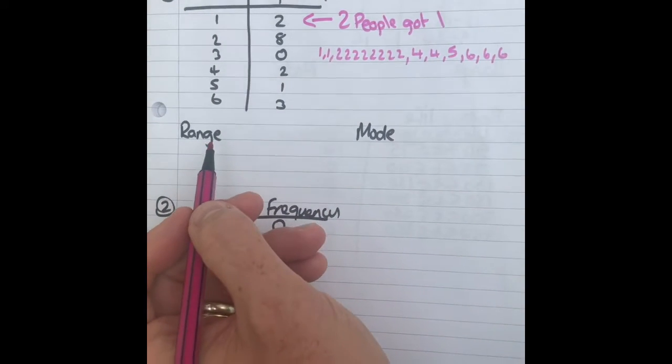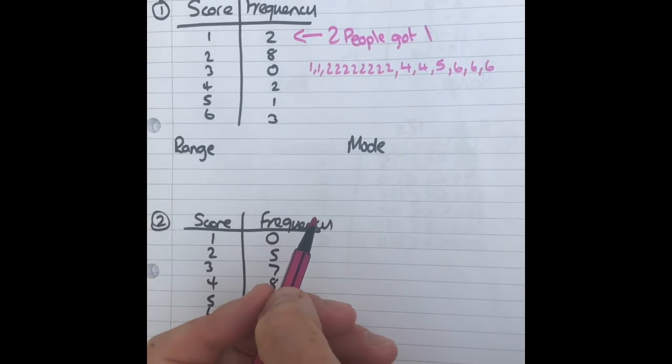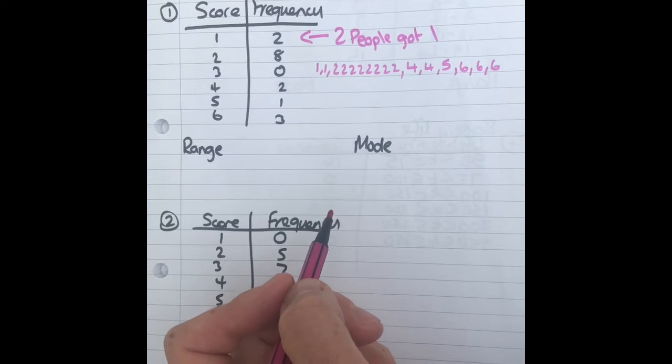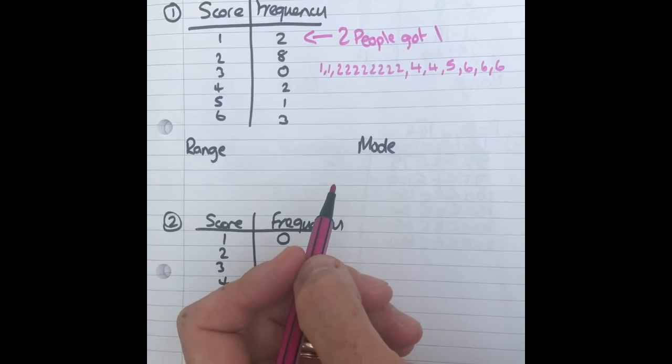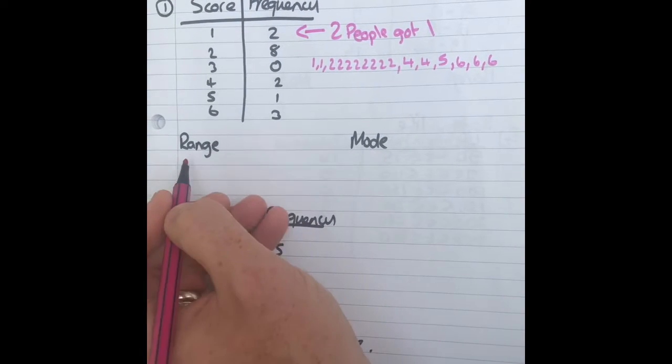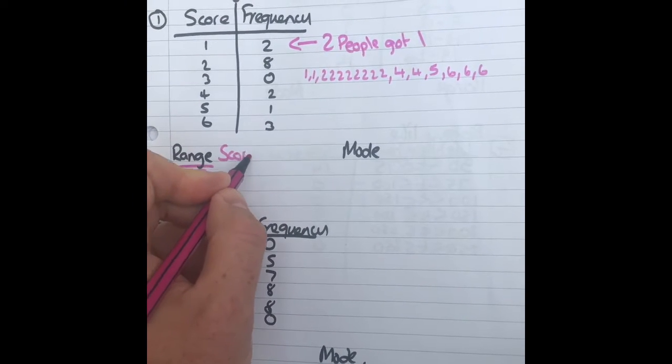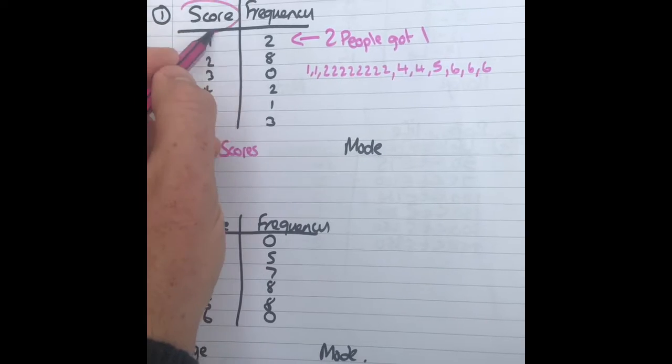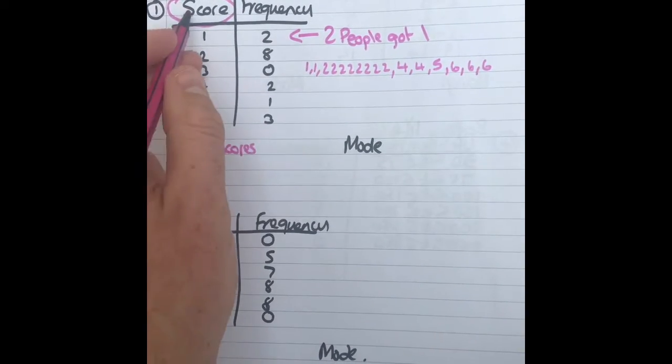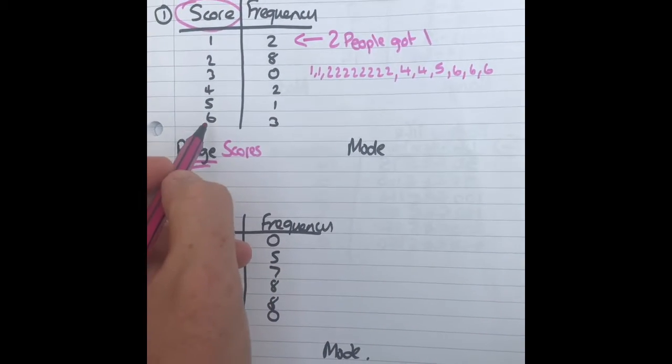We could use the list like you've done before to find the range and mode and mean and median. But we're going to do it from the table. So the range means what is the range of the scores? It's always of this first column, not the frequency.